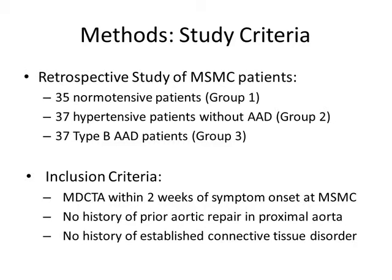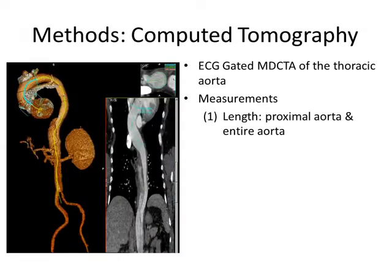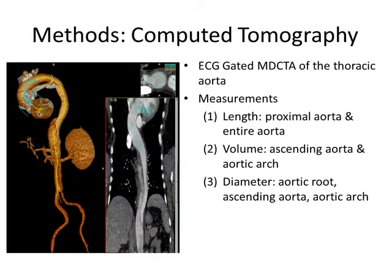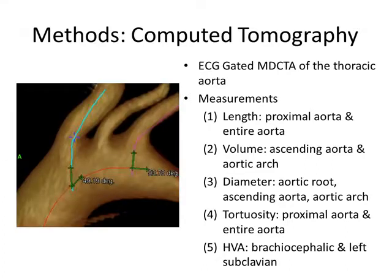From here, we assessed vitals, medical history, and demographics, along with ECG-gated MD-CTA of the thoracic aorta, in which we assessed the midline length of the proximal and entire aorta, the volume and diameter of segments of the proximal aorta, tortuosity defined by the midline length divided by the straight-line distance between segments of the proximal and entire aorta, as well as angulation of the brachiocephalic and left subclavian arteries of the ostium of the aortic arch.